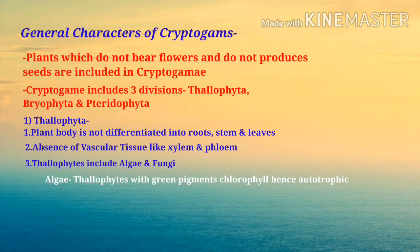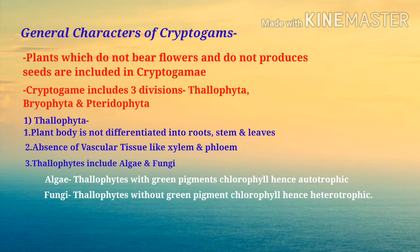Algae have green pigments — hence they are autotrophic in nature. Fungi are thallophytes without green pigments, meaning without chlorophyll — hence they are heterotrophic. So in summary: cryptogams do not produce flowers and seeds, and are divided into three divisions: thallophyta, bryophyta, and pteridophyta. Thallophyta includes algae, which are autotrophic, and fungi, which are heterotrophic.